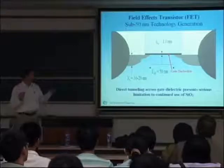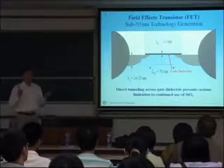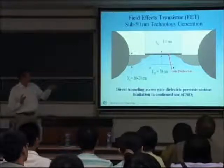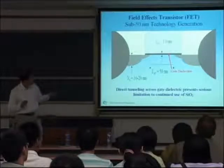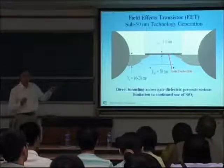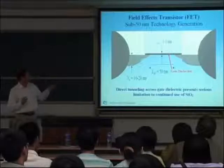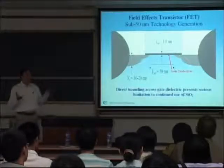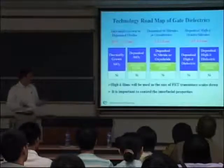If it is very thin, there's a problem. It cannot hold the charges, because if you apply a positive voltage here, the electrons will be attracted, yes, but then they will tunnel through at the same time. So you need something thicker. But we cannot make it thicker, so we need a different material.